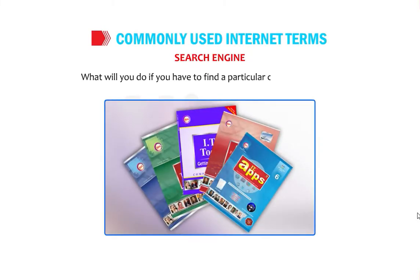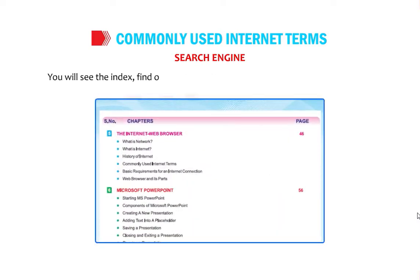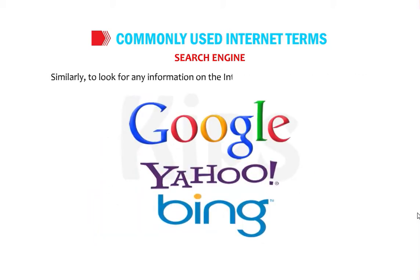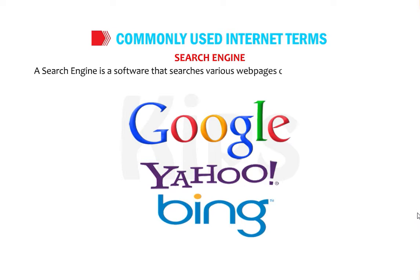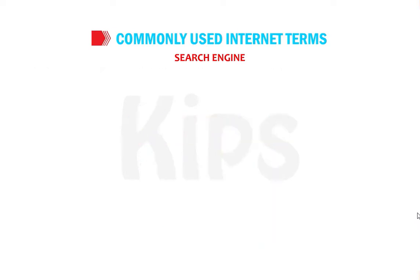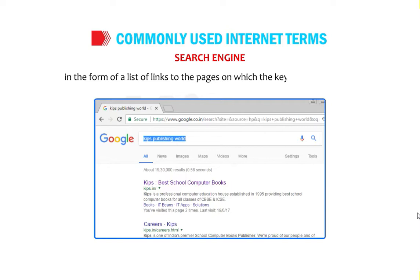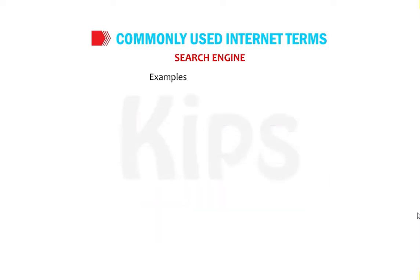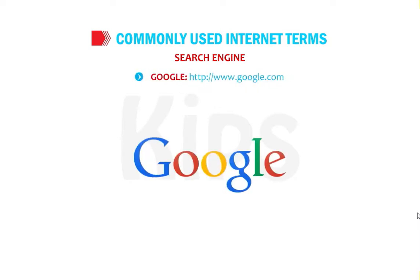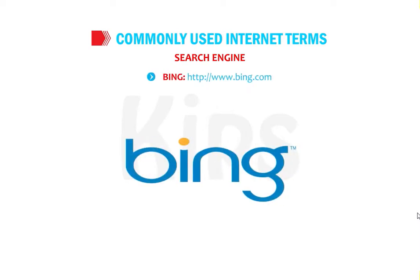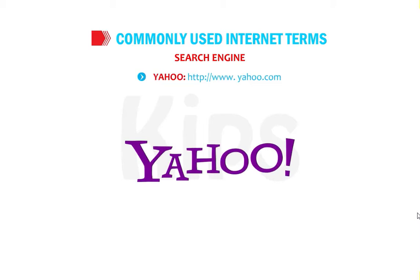Just as you use an index to find a chapter in a book, you can use a search engine to find information on the internet. A search engine is software that searches various web pages on the World Wide Web for particular information. The user enters a keyword and the engine displays a list of links to pages where the keywords are found. Examples of search engines are Google (www.google.com), Bing (www.bing.com), and Yahoo (www.yahoo.com).